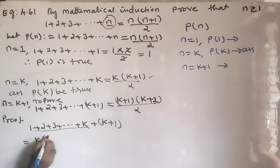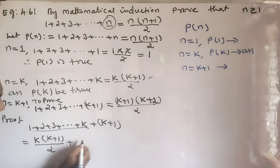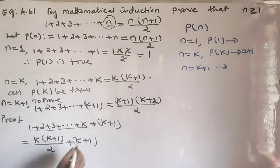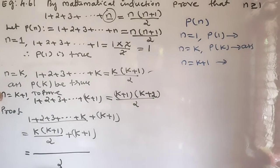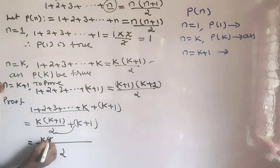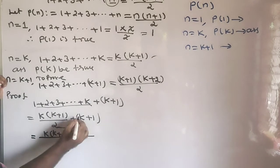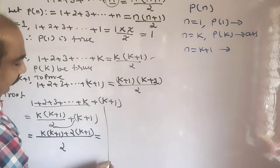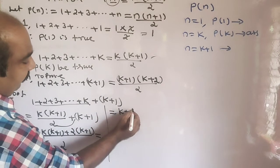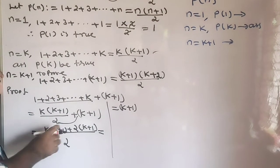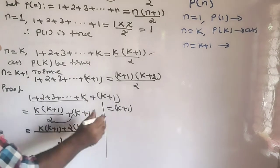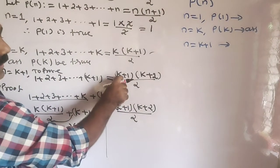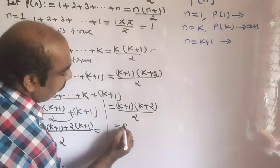We get k(k+1)/2 plus (k+1), which equals (k+1) times (k+2) divided by 2. Therefore k plus 1 equals k plus 1 into k plus 2 by 2, which equals P(k+1). So P(k+1) is proved true.